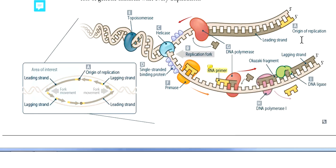There are three DNA polymerase enzymes for prokaryotes: DNA polymerase 1, 2, and 3. For eukaryotes there are five DNA polymerase enzymes, which are DNA polymerase alpha, beta, gamma, delta, and epsilon.